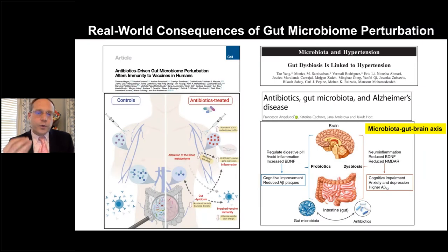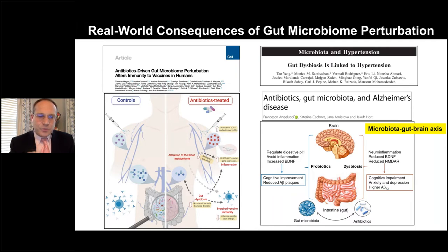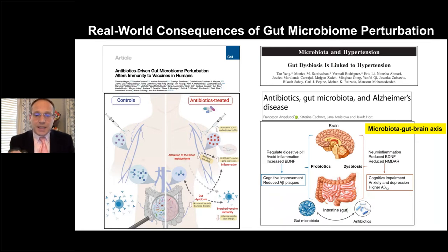What are the real-world consequences of gut microbiome perturbation? There is evidence that antibiotic-driven gut microbiome perturbation can alter immunity to vaccines — in particular, the influenza vaccine. Gut dysbiosis has also been linked to hypertension and to Alzheimer's disease through a microbiota gut-brain axis.